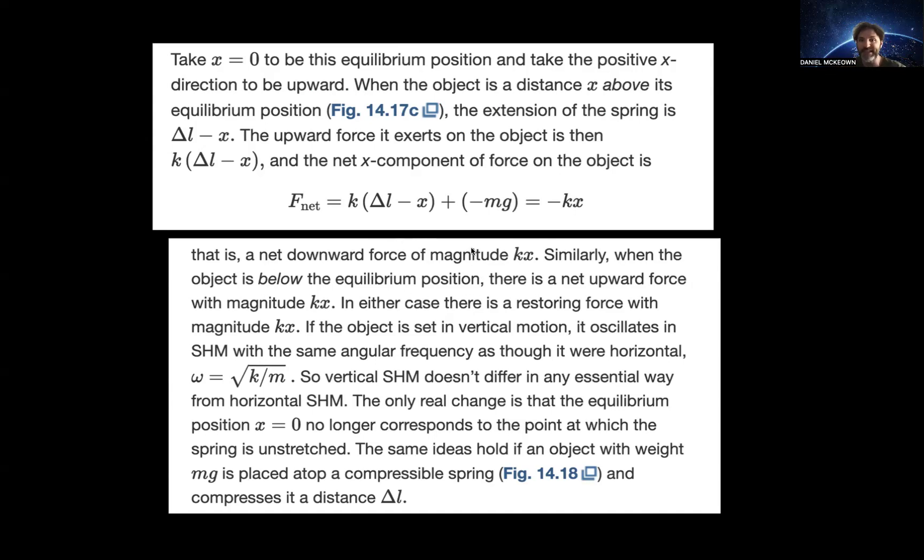So what that means is that's the net downward force of magnitude KX. And when the object is below the equilibrium position, there's a net upward force wanting to pull it back that way, and it's positive KX. Either case, we've got a restoring force with magnitude KX. So that's vertical motion. Still simple harmonic motion. Omega is still square root of K over M. The vertical simple harmonic motion doesn't differ in any way from horizontal simple harmonic motion. The only change is that equilibrium position.